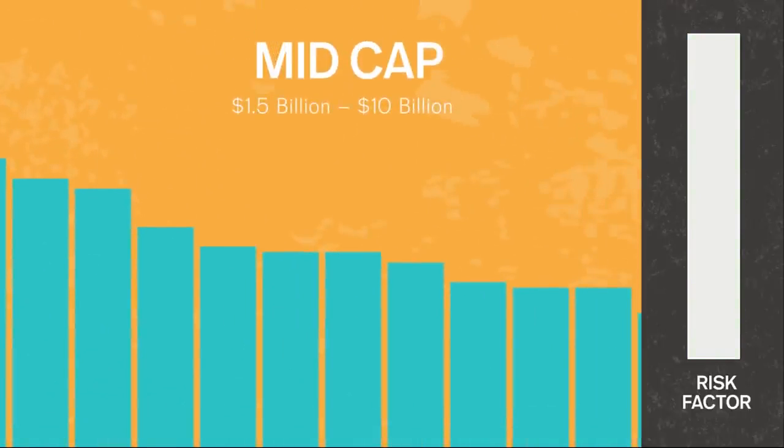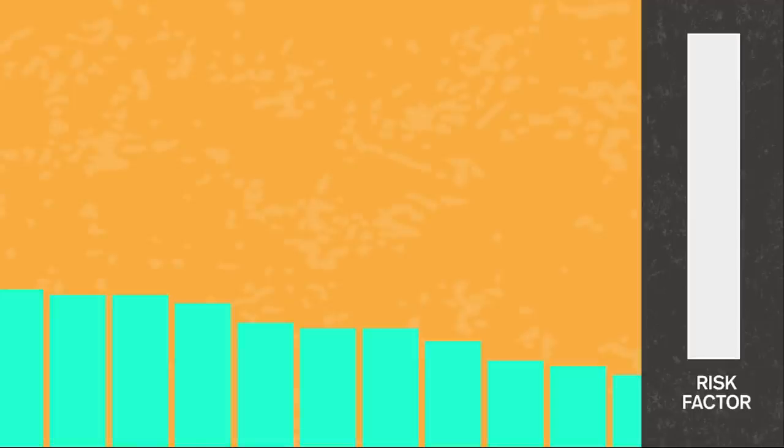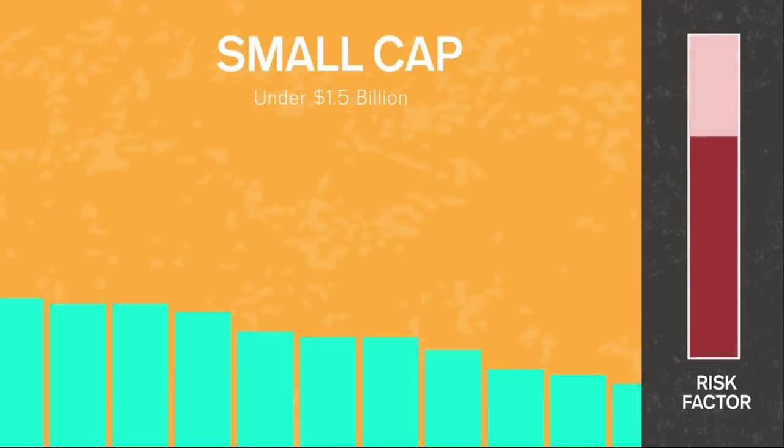Mid-cap stocks include roughly the next 400 companies by size. Smaller, but still fairly well-established. They're considered riskier than large-cap. Following large-cap and mid-cap, take the next 2,000 companies and you've got small-cap stock. While they have potential for greater growth, they also have the greatest risk.